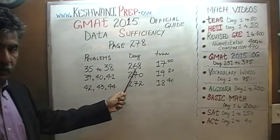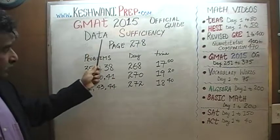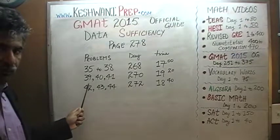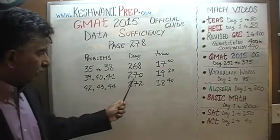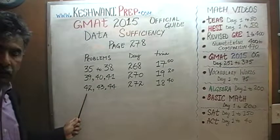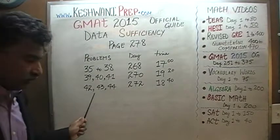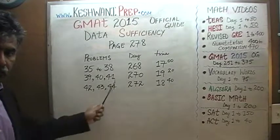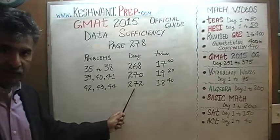on Day number 268 — just type in 'GMAT math Day 268' and it will pop right up. You will find the solutions to problems number 39, 40, and 41 on Day number 270. And finally, the solutions to problems 42, 43, and 44 you will find on Day number 272.